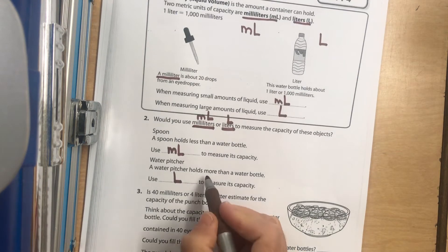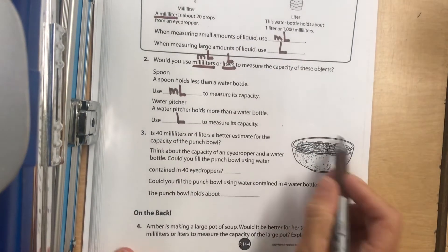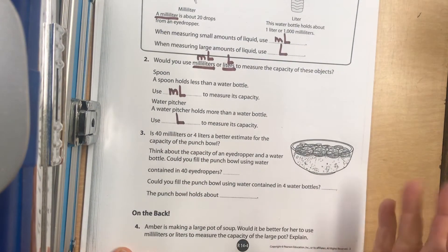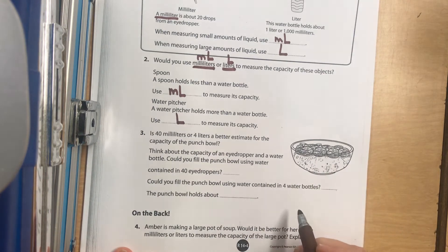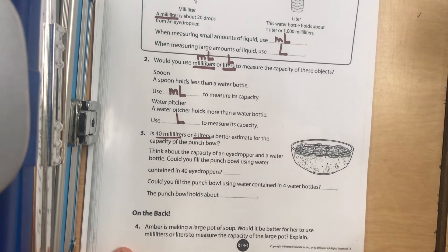Liters, because it holds more than a bottle of water. All right. So now let's look at this one. We want to look at this bowl over here. This is like a big, huge punch bowl, and they have some lemon slices on the top. Do we think this is 40 milliliters or 4 liters?